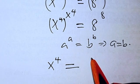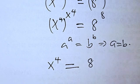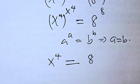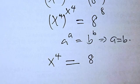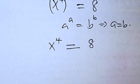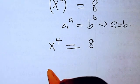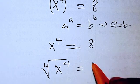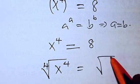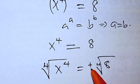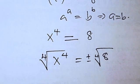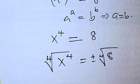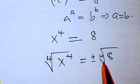So now we are going to take the fourth root of both sides. When taking the fourth root, if you're taking even roots, you're going to have plus or minus.